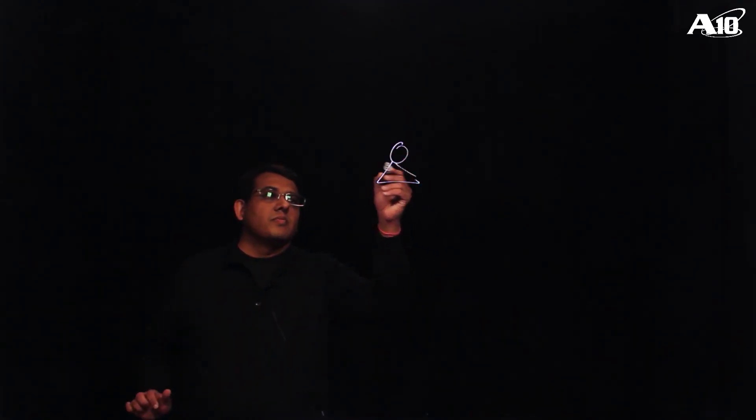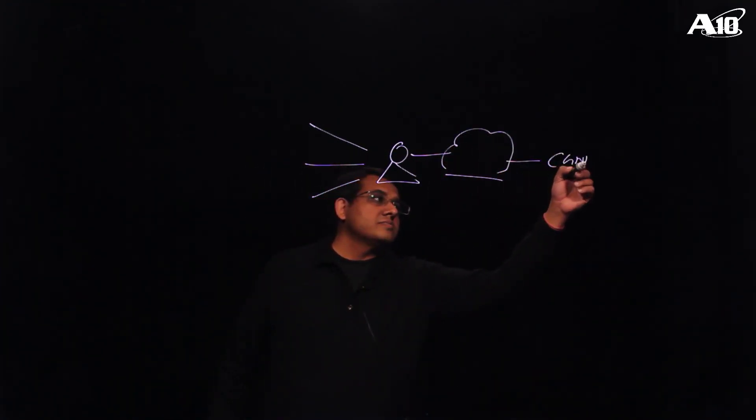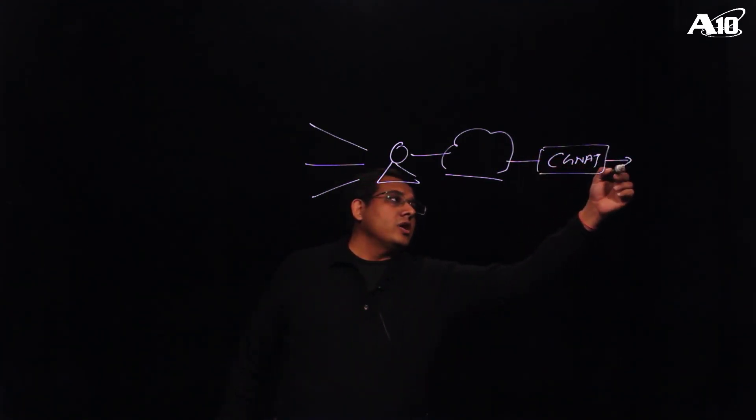So the way it works is that you have your cell phone towers, your clients coming in, they go through a service provider cloud, then they go through a CGNAT box and then they go out to the internet.